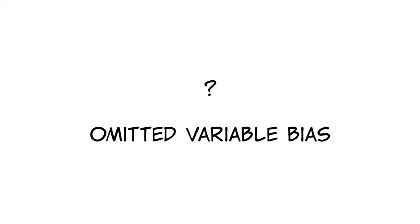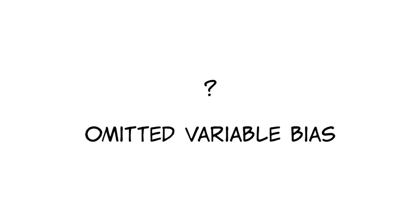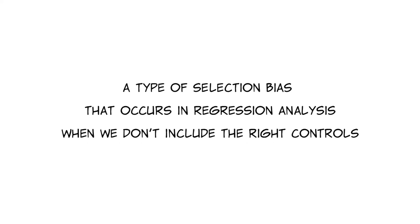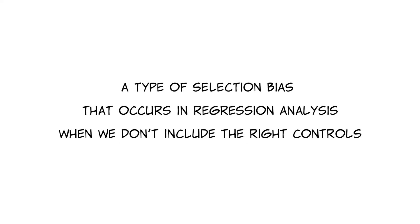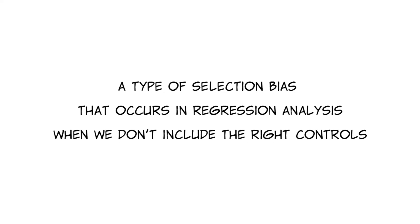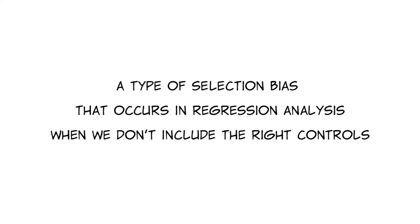What is omitted variable bias? It's a type of selection bias that occurs in regression analysis when we don't include the right controls.